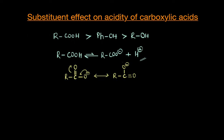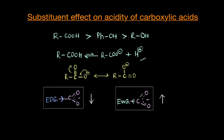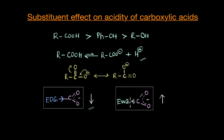Substituents can be of two different types: electron donating groups or electron withdrawing groups. An electron donating group adds more electron density onto the carboxylate group and destabilizes it, because there is already sufficient electron density present — adding more only destabilizes it, so acidic strength decreases. On the other hand, an electron withdrawing group stabilizes the conjugate base by drawing electron density away from the carboxylate group, and as a result acidic strength increases.